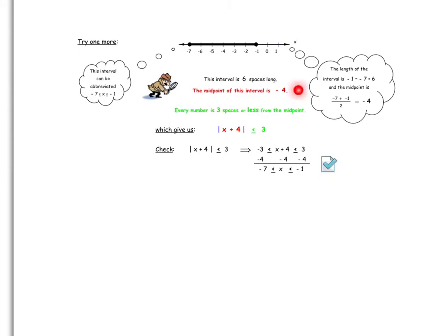The interval is 6 spaces long. The midpoint is negative 4. The distance on either side, 3, which gives us absolute value bars. x minus minus 4. Remember, you always do x subtract the midpoint. If the midpoint is negative 4, that gives us x, minus minus makes a plus 4, is less than or equal to 3 spaces.